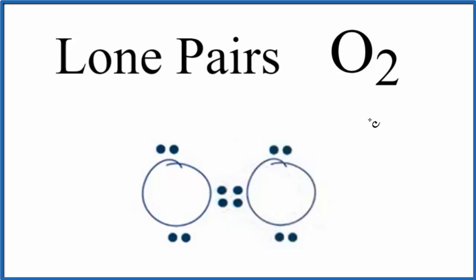So to find the number of lone pairs, lone pairs are not involved in chemical bonds. So these electrons here, they're not involved in any chemical bonds, so we call these lone pairs. We also call them unbonded pairs of electrons.